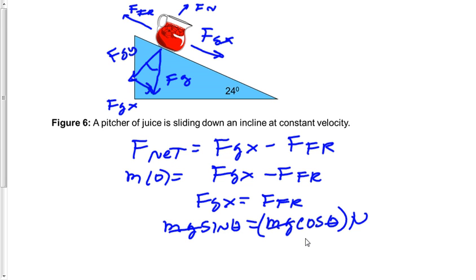Let me explain that again. So dividing by cosine of theta on both sides, you will get mu equals sine of theta divided by cosine theta. Or mu equals tangent of theta.